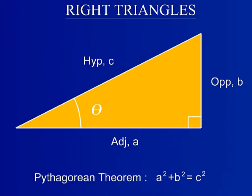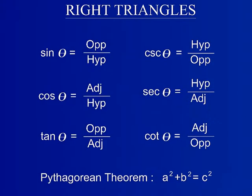Another key property of right triangles is the Pythagorean theorem. The length adjacent squared plus the length opposite squared is equal to the hypotenuse squared. The seven properties discussed are the most common trigonometry properties used.